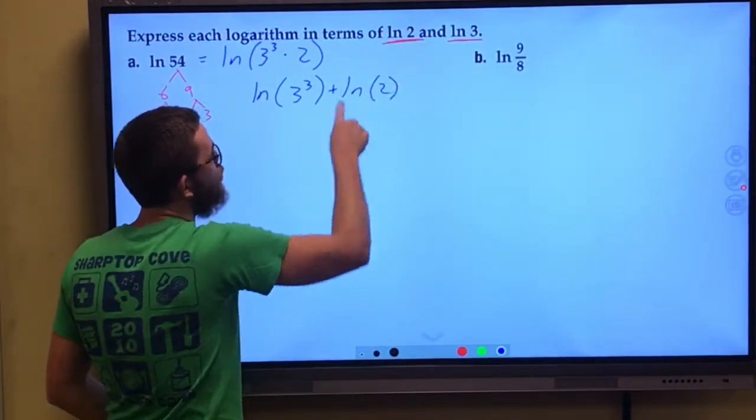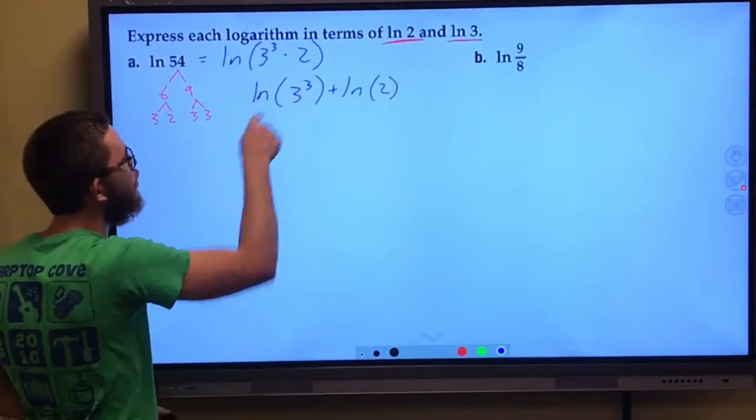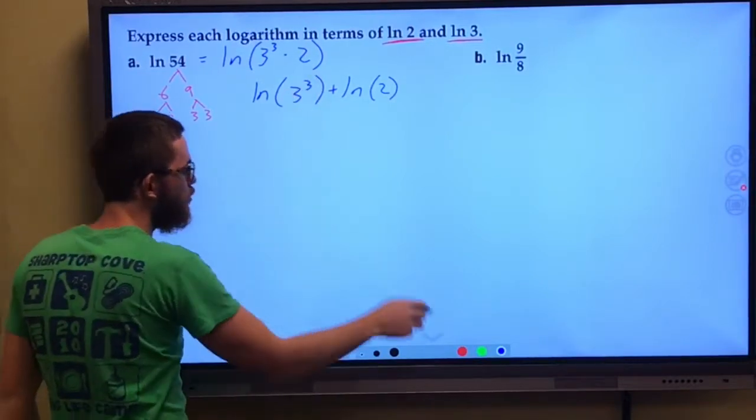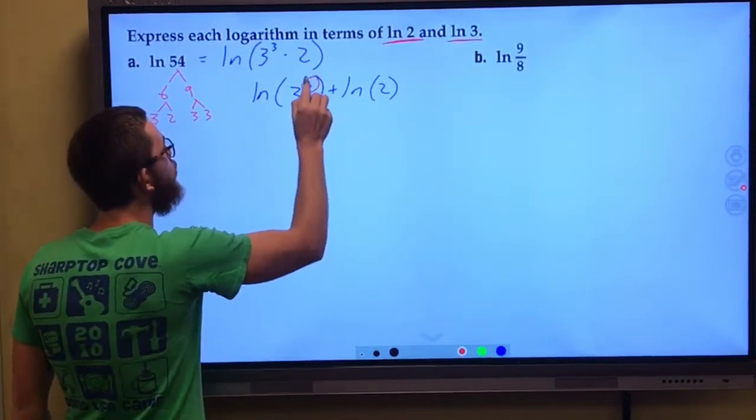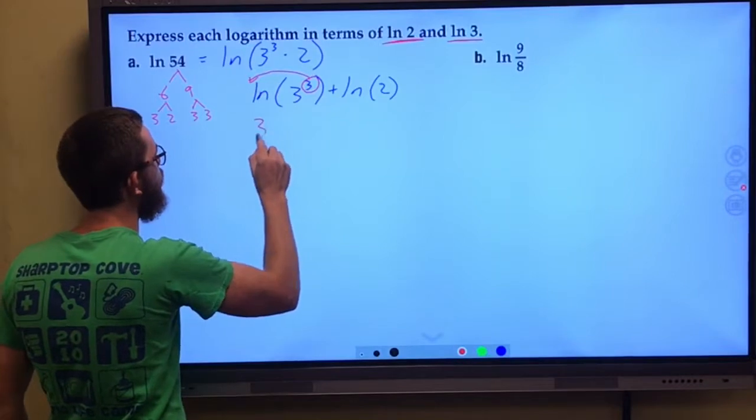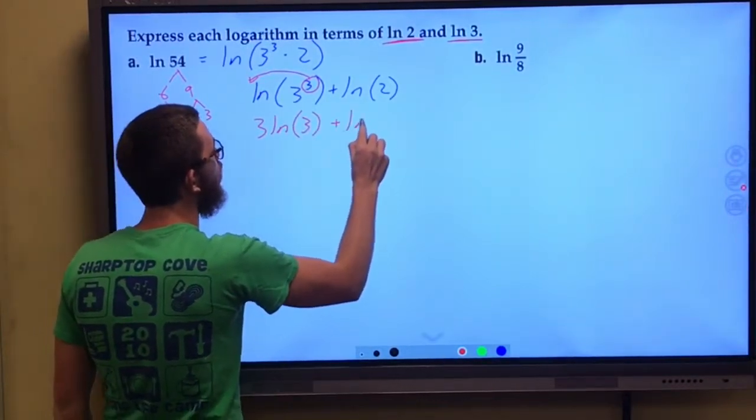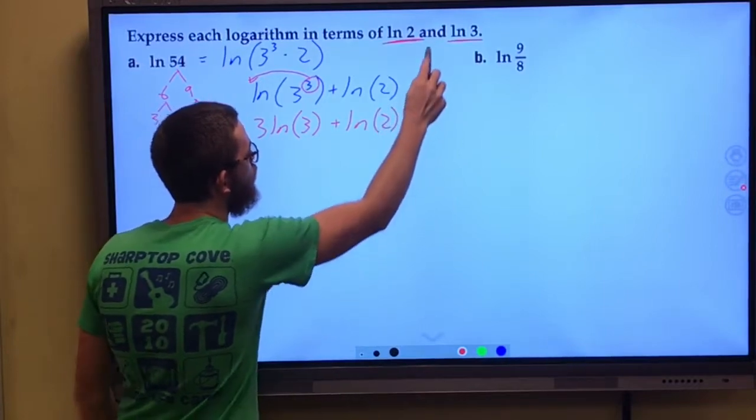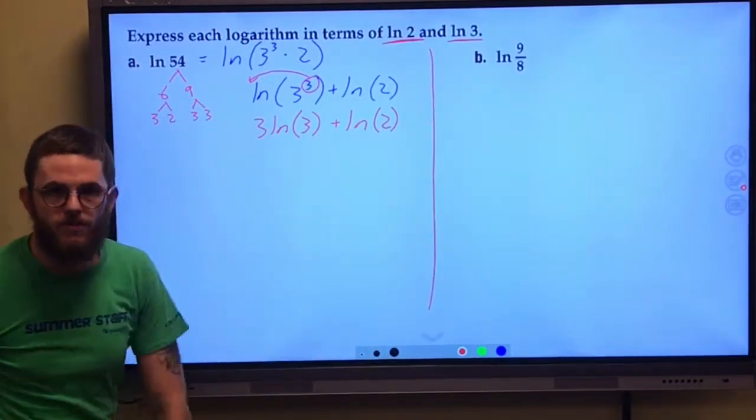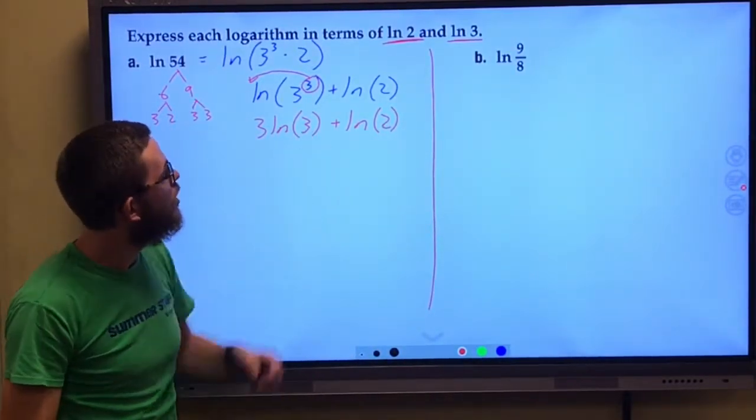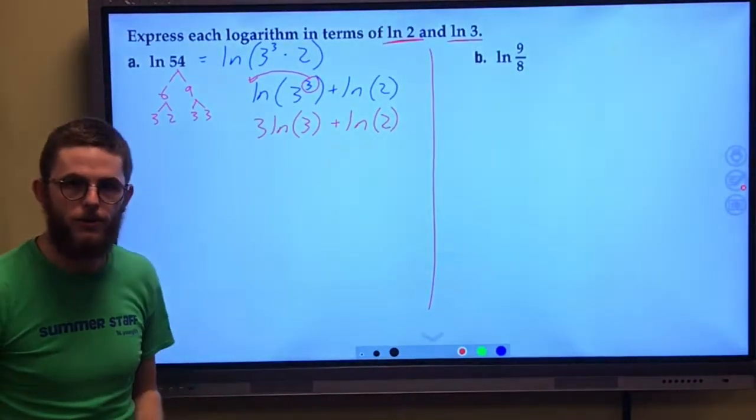And so this is already in terms of natural log of 2, but this one is natural log of 3 cubed. I'm now going to use my power rule to bring that 3 out to the front. This is 3 natural log of 3 plus natural log of 2. And now that is our final answer. We have it in terms of natural log of 3, natural log of 2.